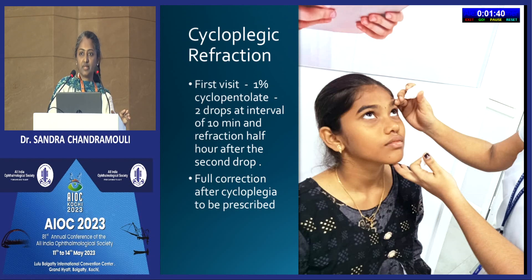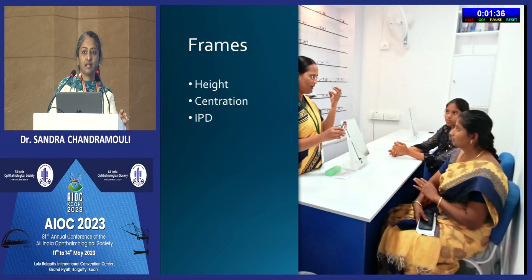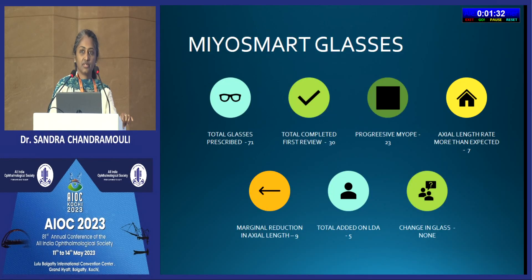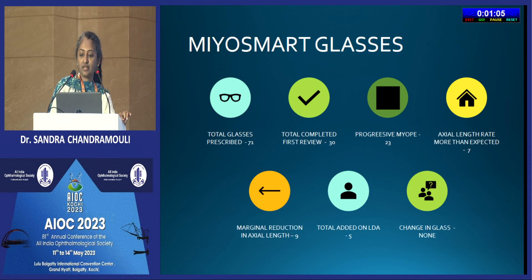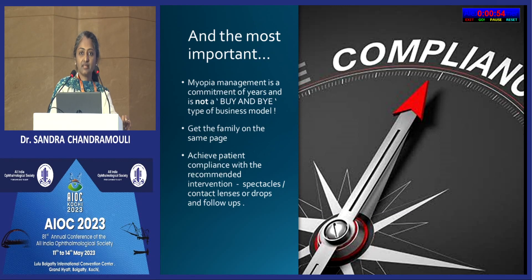Cycloplegic refraction with full cycloplegia is important to avoid over-minusing children. Correct focus, frame fit, and centration are equally important. In our study with Myosmart glasses with nine months follow-up: 71 glasses were prescribed, of which 30 patients came for six-month follow-up. Before starting, 23 were progressive myopes and seven were started due to strong family history and young age. None of the children required a change of glasses so far, but axial length exceeded the expected rate in seven of them. Five of them had low-dose atropine added in combination, with marginal reduction in axial length seen in around nine patients. Environmental and behavioral modifications are paramount - unless these are achieved, the interventions will not work.